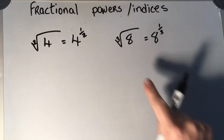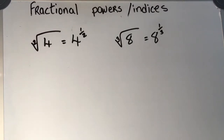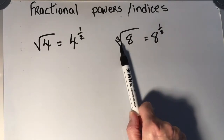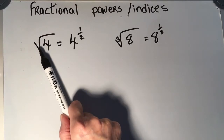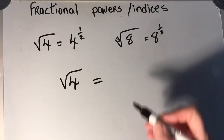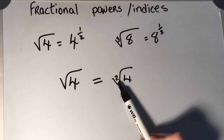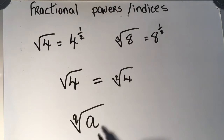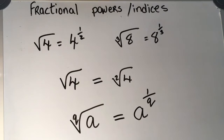Let's look at these two results. The cubed root of 8 is equal to 8 to the power of 1 third, and the square root of 4 is equal to 4 to the power of 1 half. I can see where that 3 comes from — it's under the root sign. With the square root, there's an implied 2 underneath, which is the default value when no number is shown. So the general rule is: the qth root of a is equal to a to the power of 1 over q.